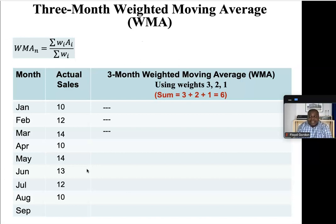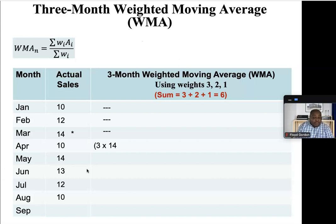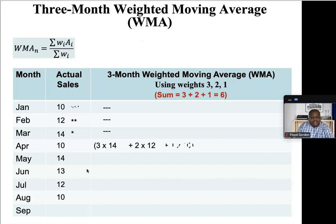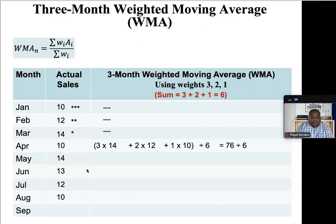The highest weight is three, so we multiply three by the most recent month. We multiply three by 14. The second highest weight is two, multiplied by the second most recent period, February: plus two times twelve. The third weight is one, multiplied by the third most recent month, January: plus one times ten. We add those up and divide by the sum of the weights, which is six.